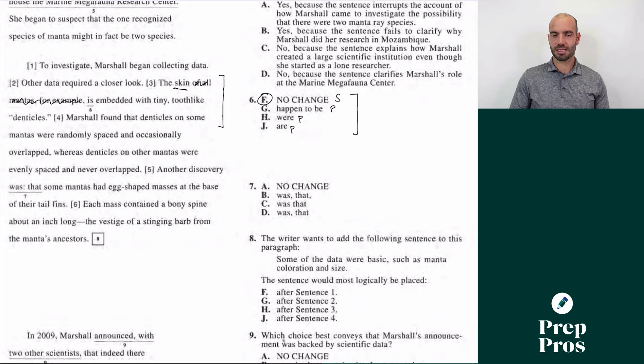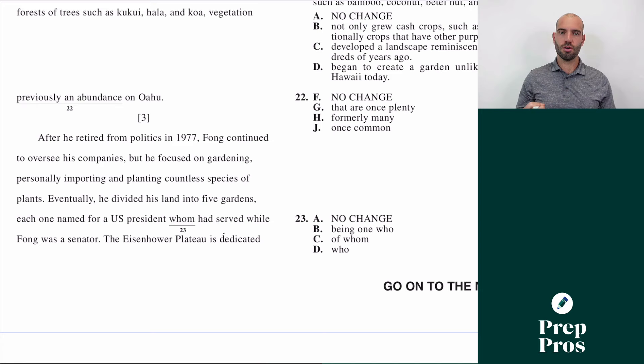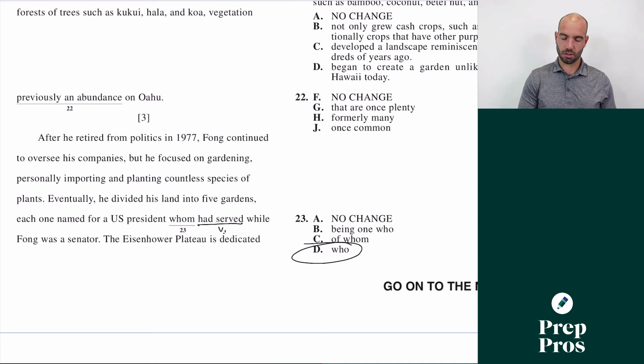The ACT almost always includes one "who" versus "whom" question on the test. You can get this right every single time using this simple trick: look at the next word. "Who" is always followed by a verb and "whom" is always followed by a noun. So if we look at the next words here, it's "had served," which is a verb, which means it has to be "who." The correct answer is going to be D.